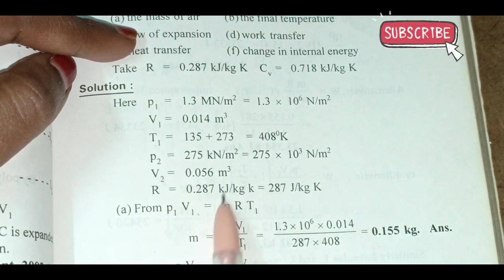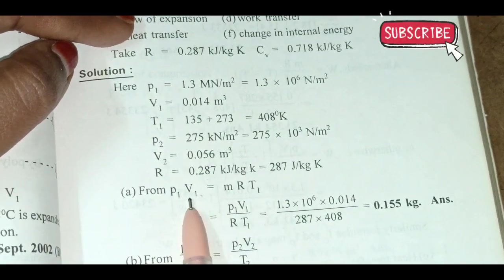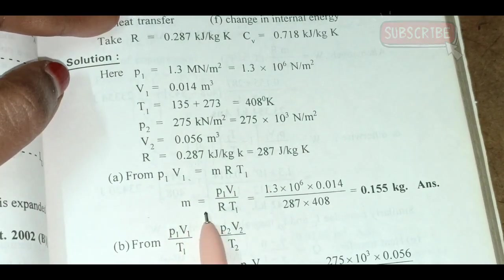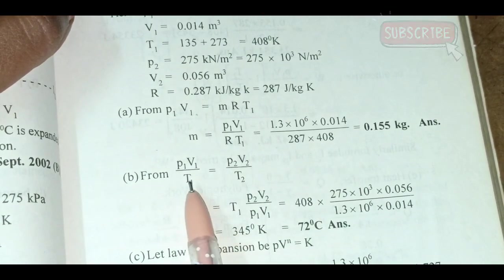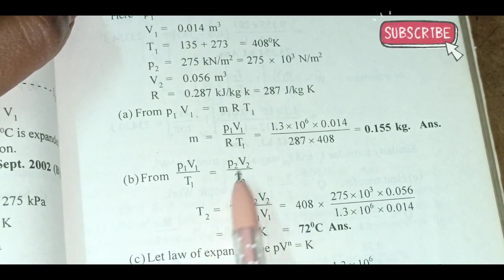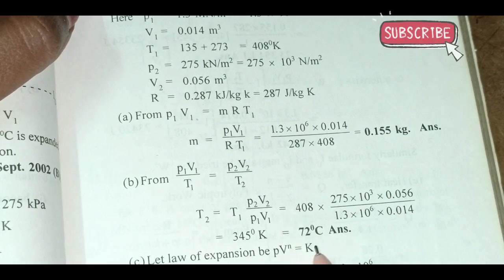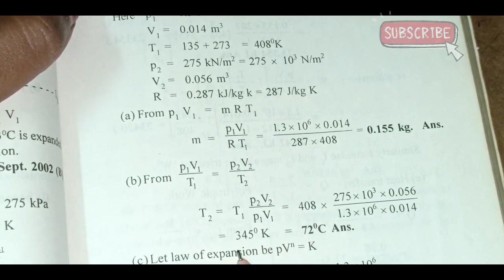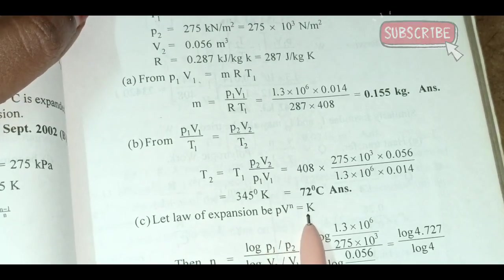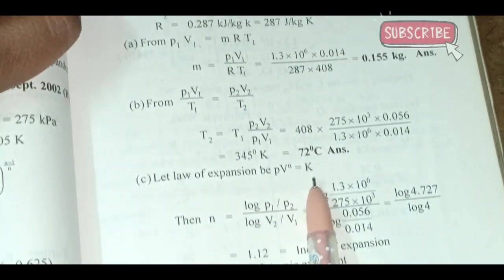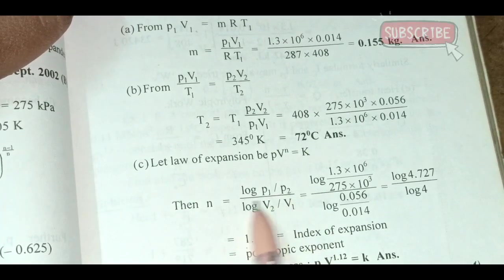Given: V2 = 0.056 m³, R = 0.287 kJ/kg·K. Using P1V1 = MRT1 to find mass M. Using P1V1/T1 = P2V2/T2, T2 is calculated as 72°C, converted to Kelvin. For the law of expansion PV^N = K, N = log(P1/P2) / log(V2/V1).